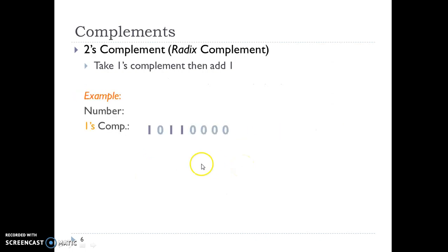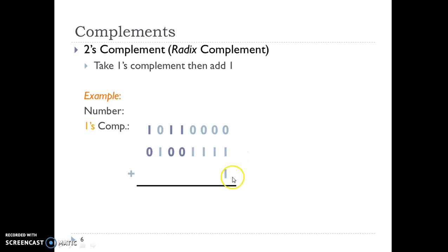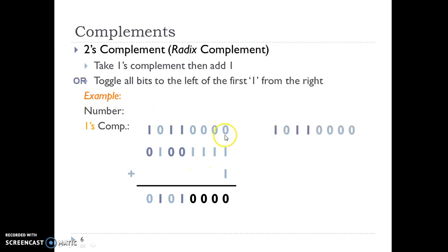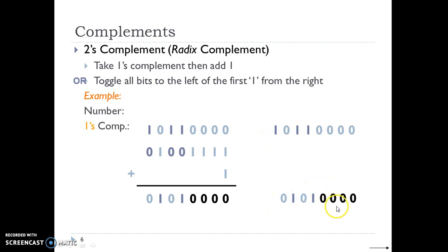Here is the example where we take the 1's complement of a number and then add 1 to get the 2's complement. There is also a shortcut: toggle all the bits to the left of the first 1 from the right. So given a binary number, we find the first 1 from the right, and then toggle all the bits to the left of that position. That gives us the complete 2's complement answer.